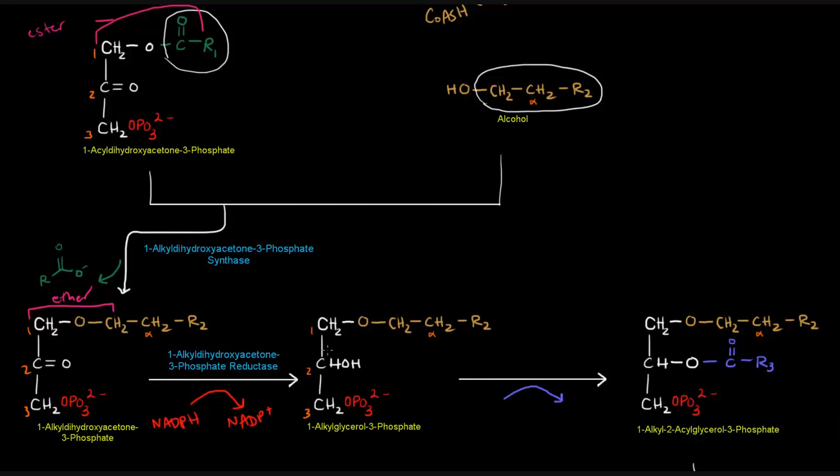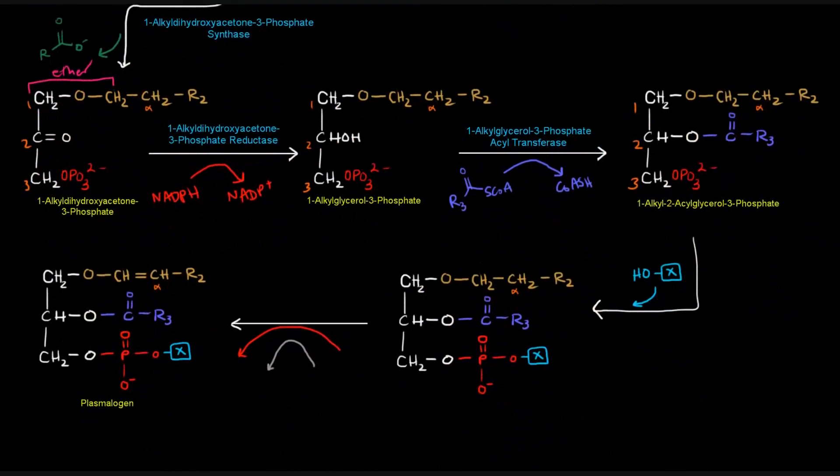That gives us 1-alkyl-glycerol-3-phosphate. From this, we get 1-alkyl-2-acyl-glycerol-3-phosphate. The difference is that we now have at carbon 2 an acyl group. Where is that acyl group coming from? It's coming from the reaction catalyzed by 1-alkyl-glycerol-3-phosphate acyl transferase. This enzyme gets the acyl group from acyl-CoAs. We have an acyl-CoA come in, coenzyme A falls off, giving us this molecule. Now there's an alkyl group at carbon 1, an acyl group at carbon 2, and the 3-phosphate.